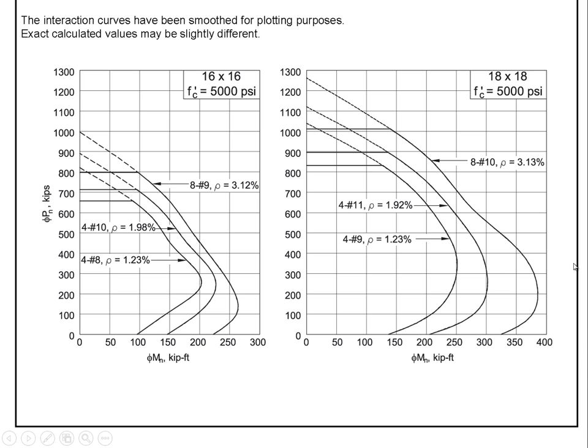But the key point is that you have to stay somehow within the bounds of these curves in order to be safe. And again, this is an 18 by 18 with eight number 10 rebars. And this tells you what the capacity of that column is.